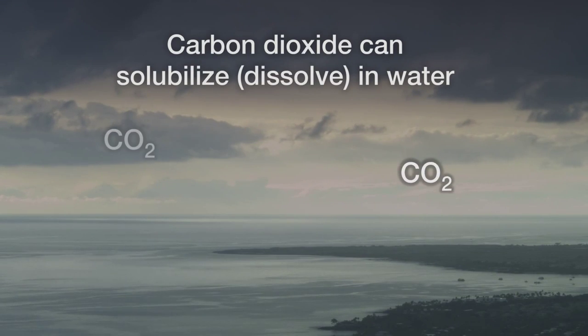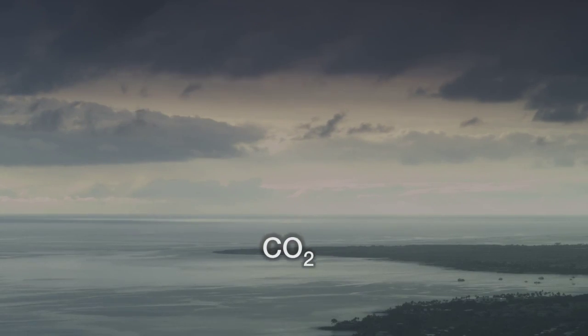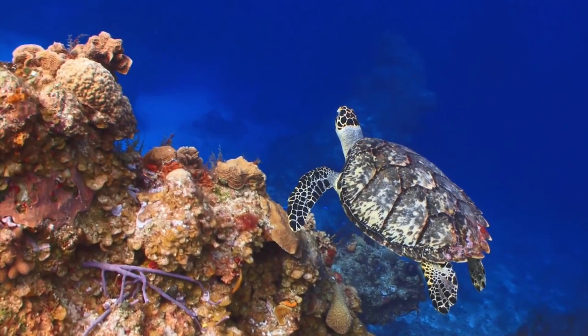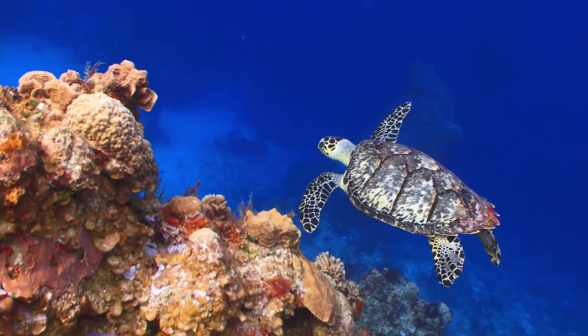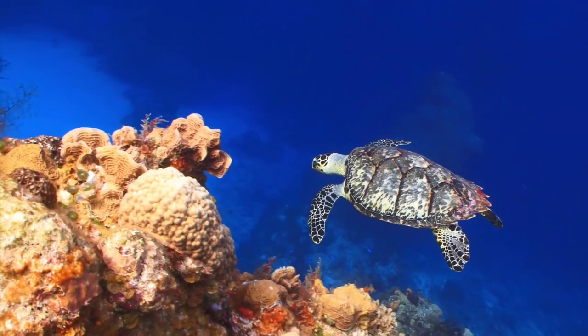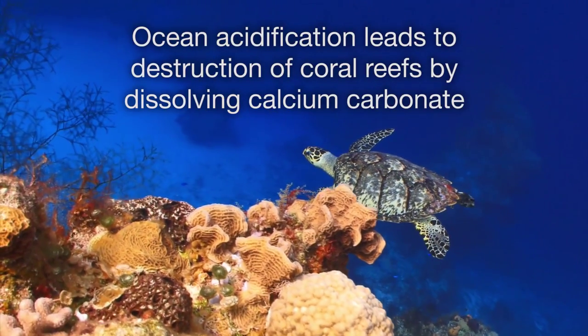Higher carbon dioxide concentrations will have effects on the earth other than temperature. Carbon dioxide can solubilize or dissolve in water. The large-scale dissolution of carbon dioxide into the oceans from the atmosphere leads to ocean acidification. Ocean acidification can be detrimental for a variety of reasons, in particular to coral reefs and other ocean organisms by dissolving calcium carbonate.